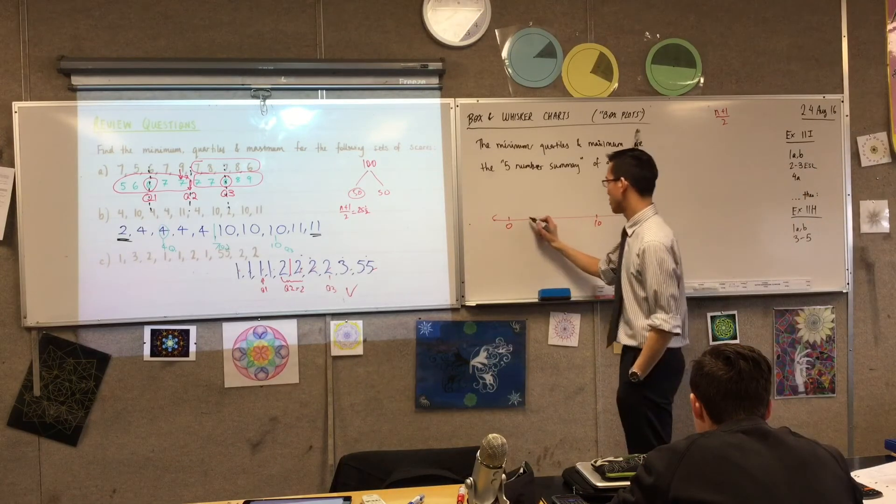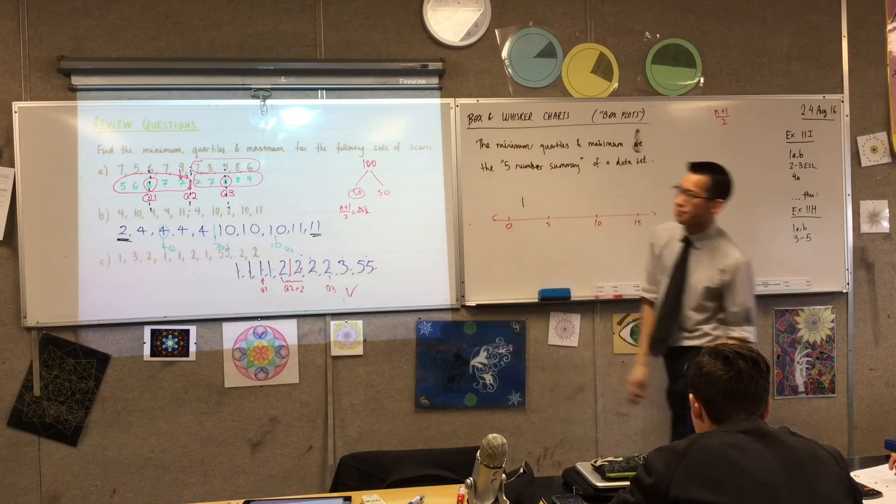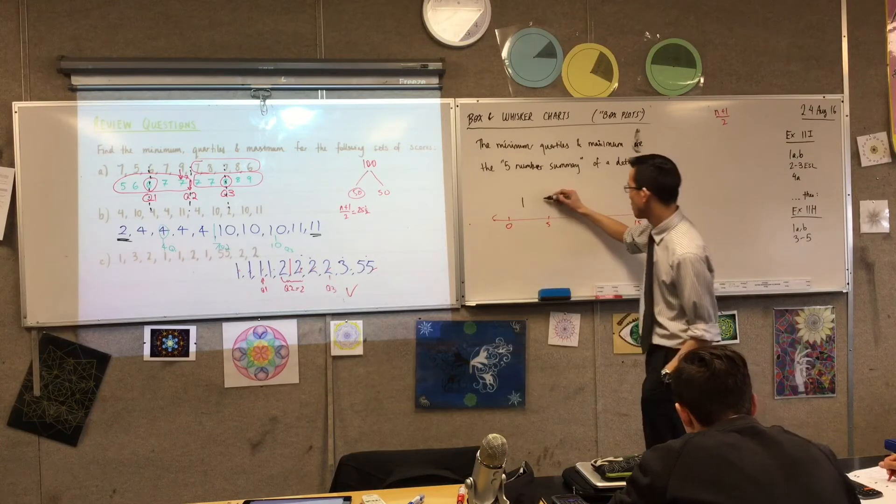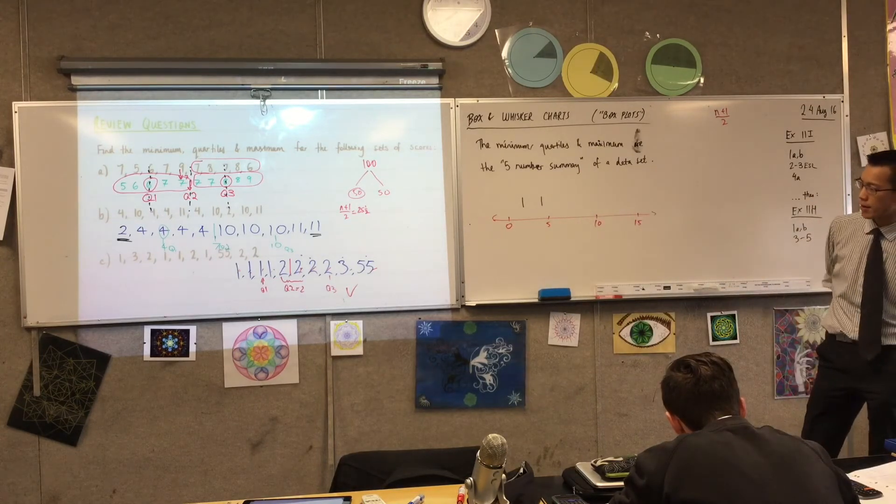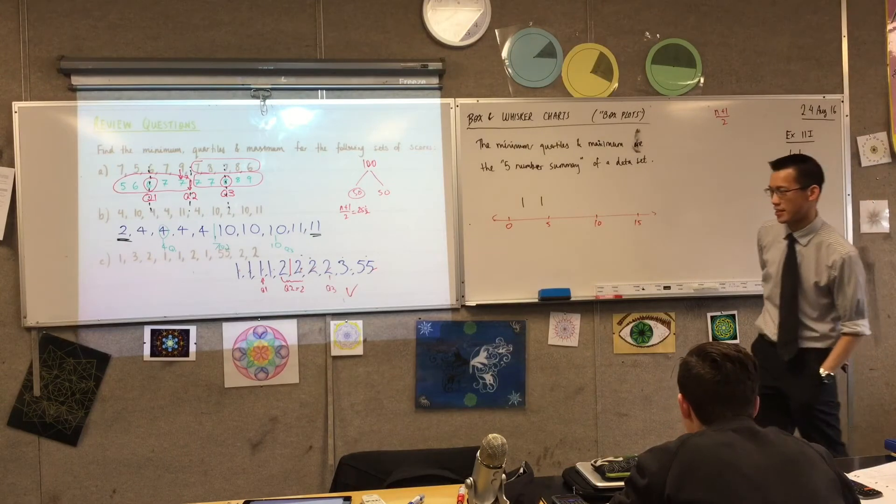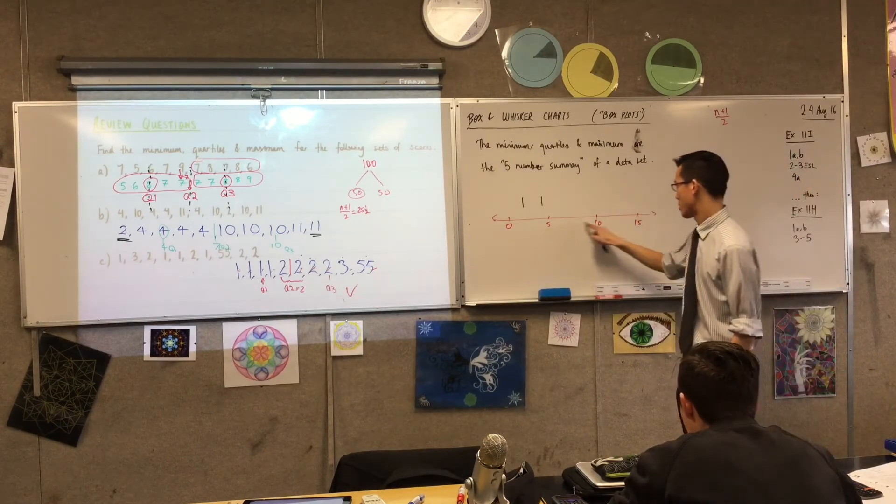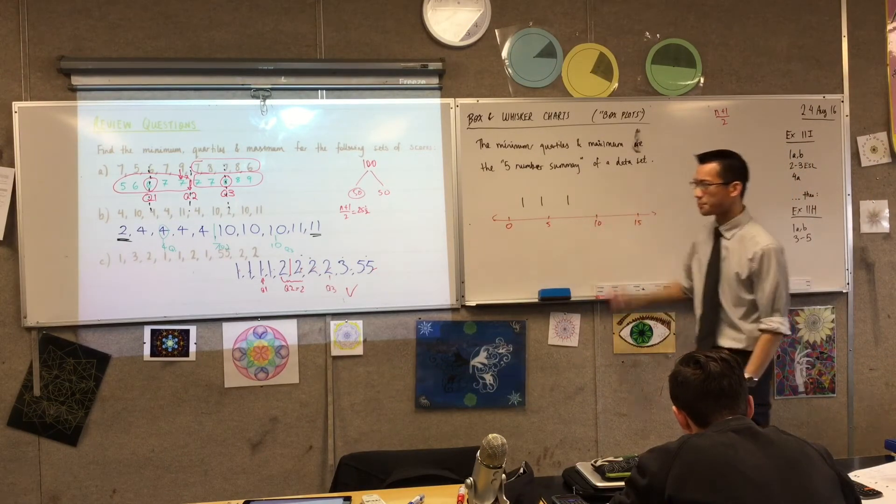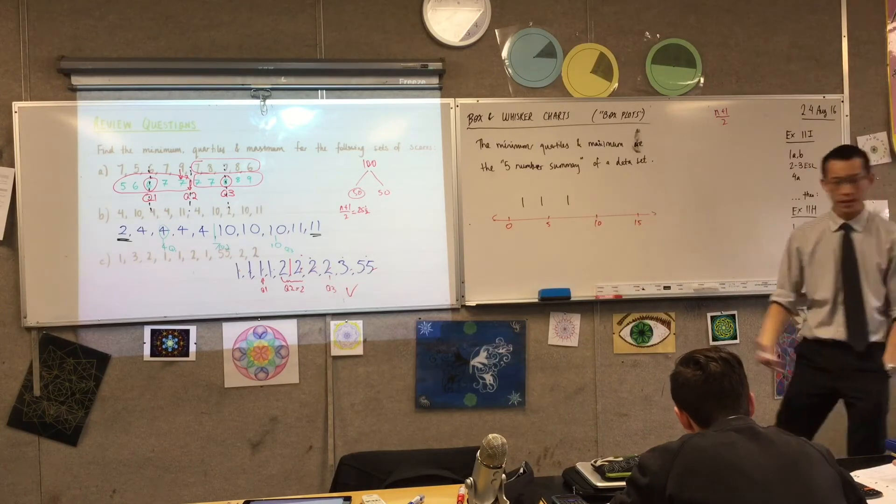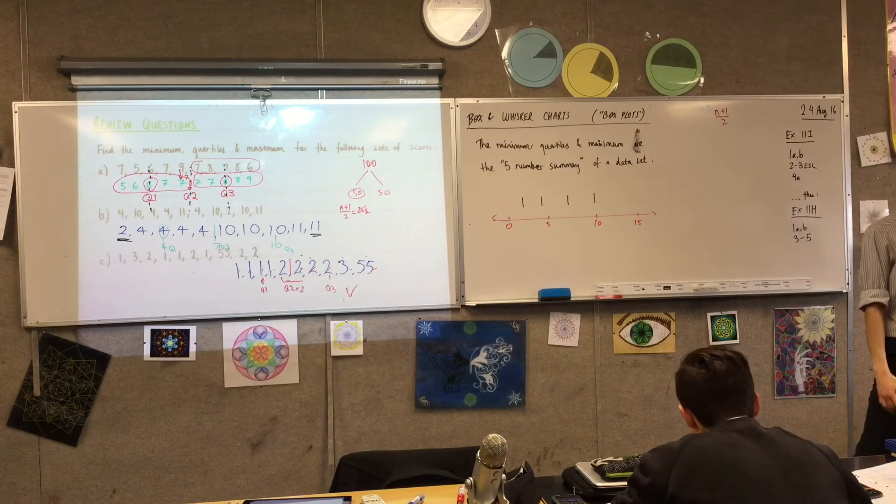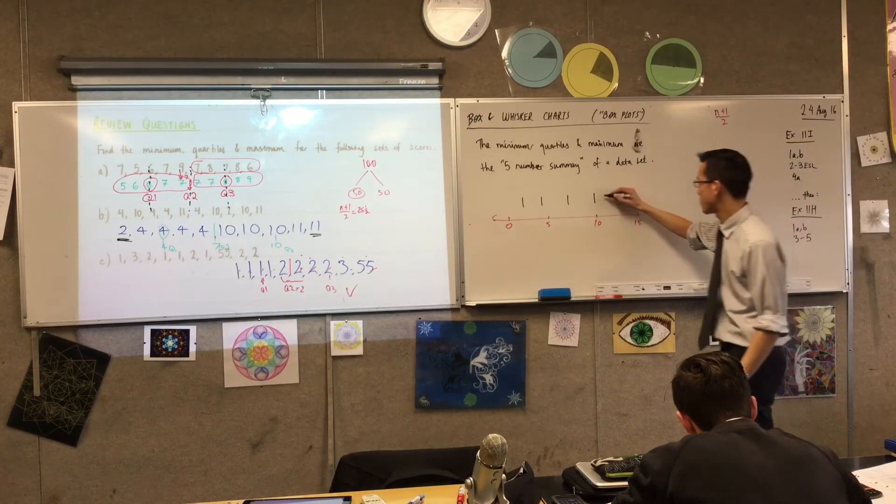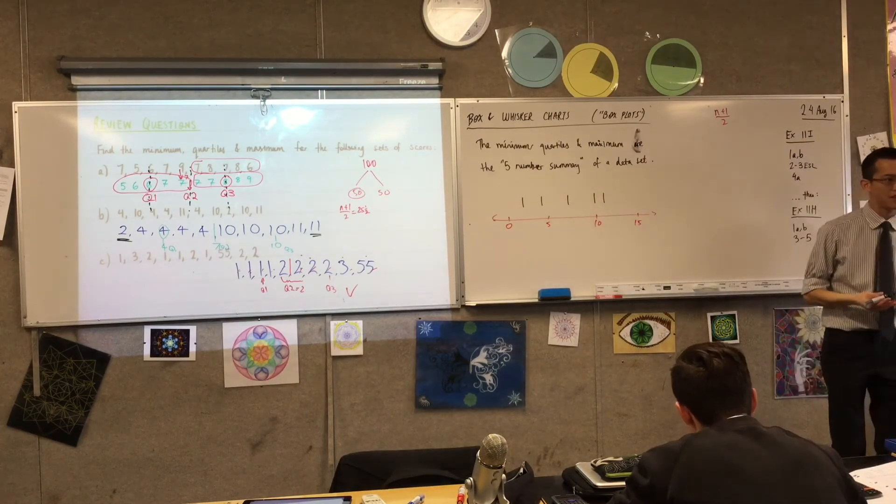Now, I'm going to put a vertical dash for each one of the numbers. So I've got 2. That's going to be about there. My next one up is 4. Then what have I got next? What is my median? It's 7, isn't it? So it's going to be about halfway there. My third quartile is 10. It's right on there. And then my maximum value is 11. So I'm pretty close to that. There you go. So these five dashes, they represent the five numbers in my five number summary.